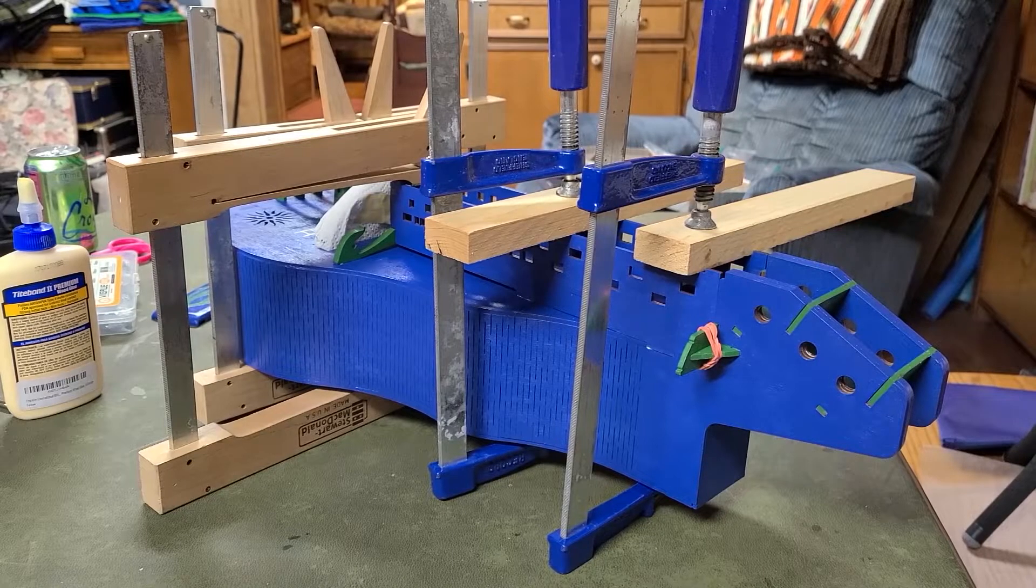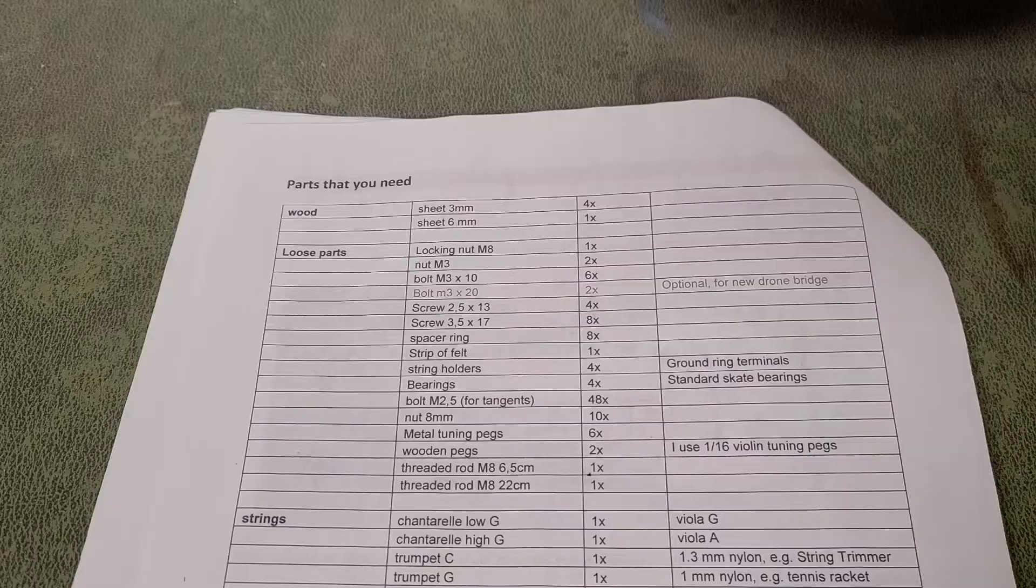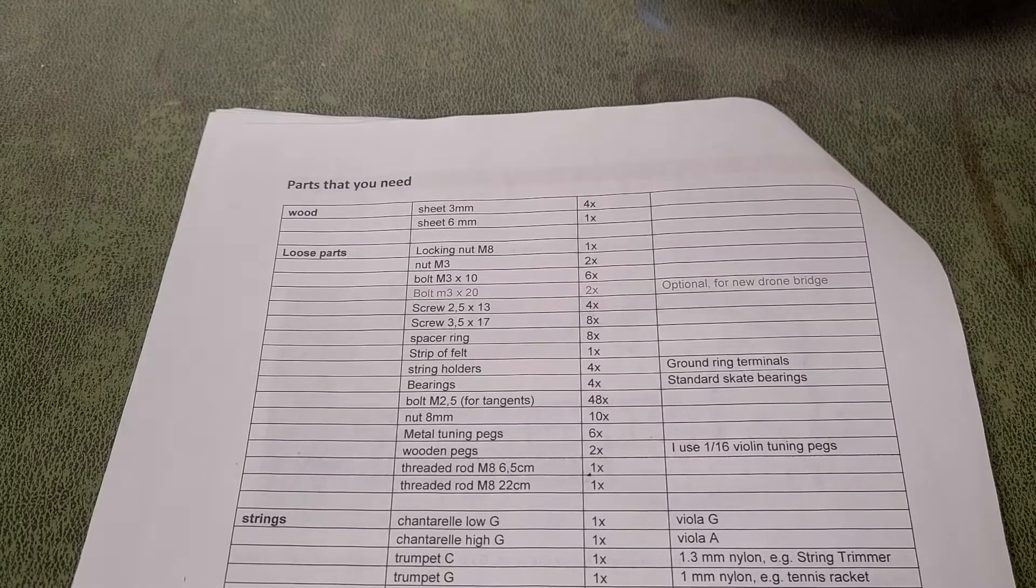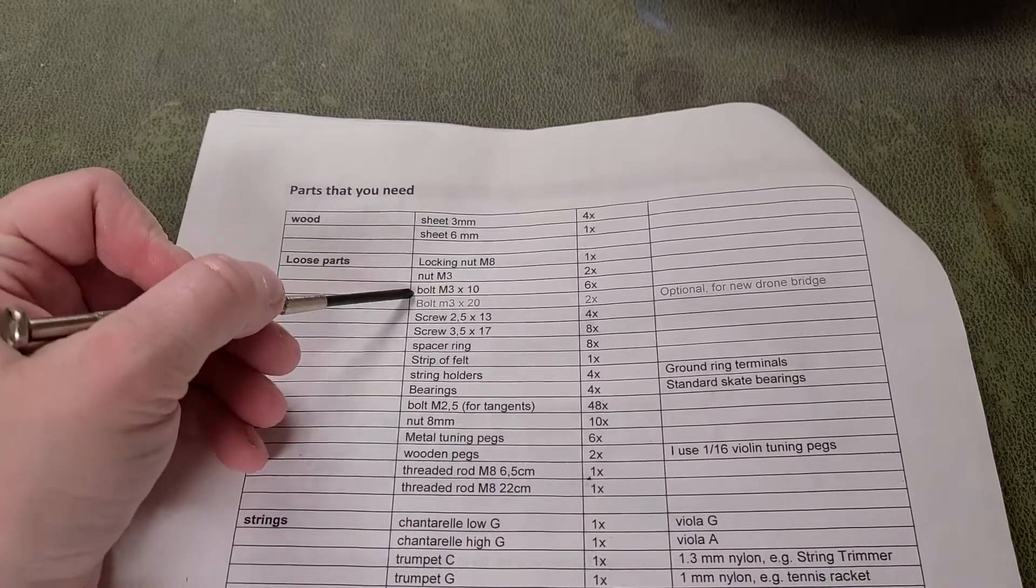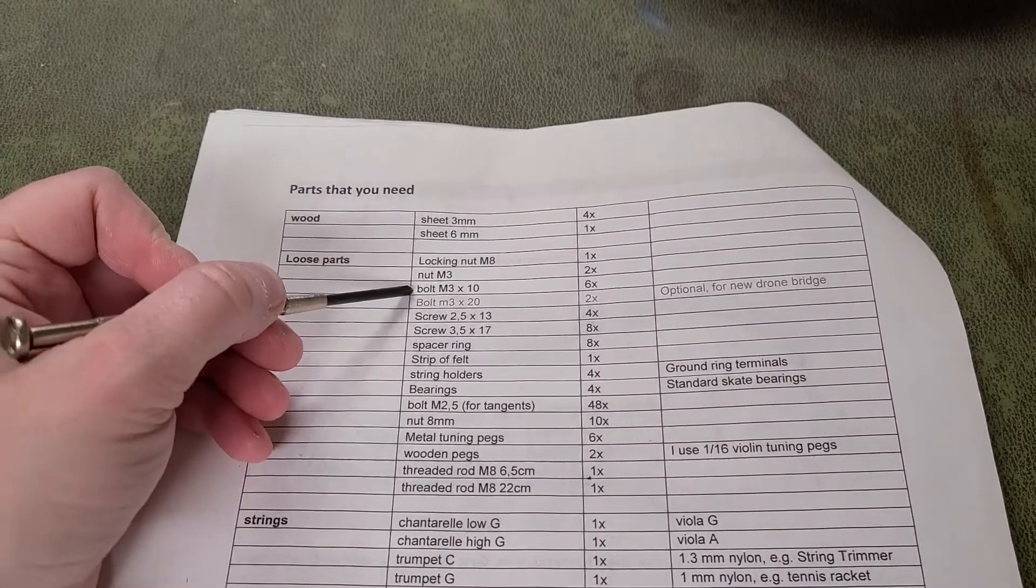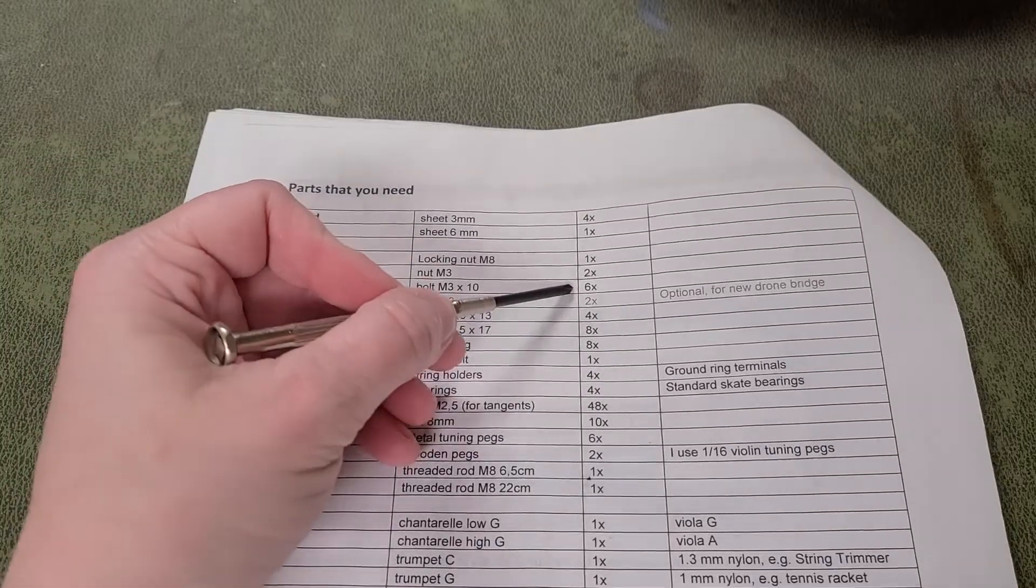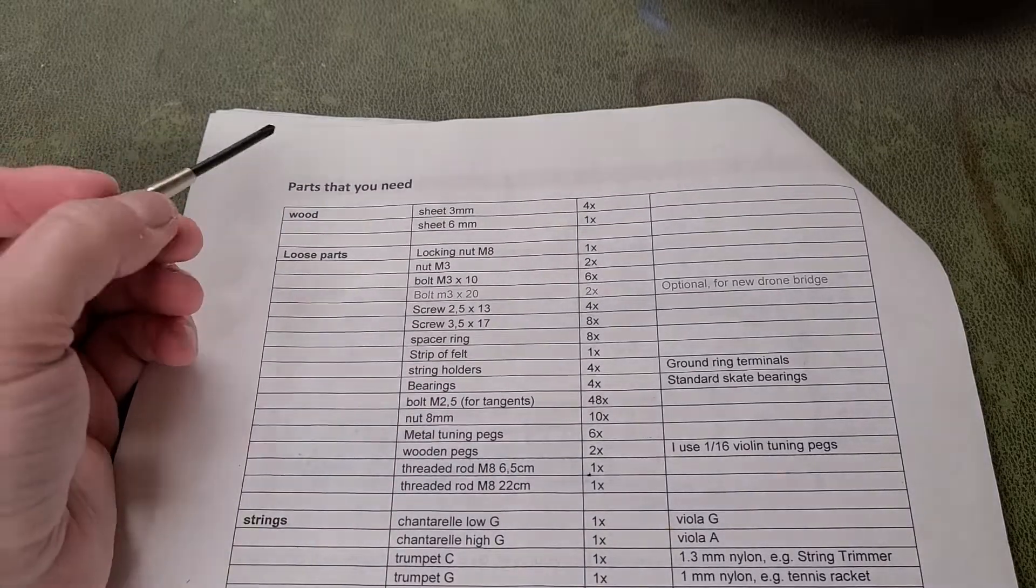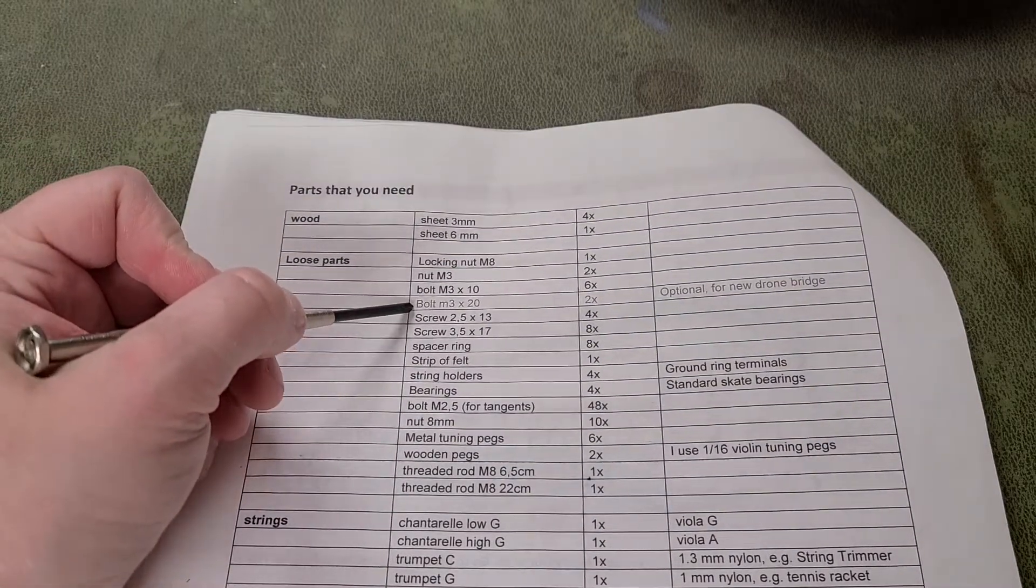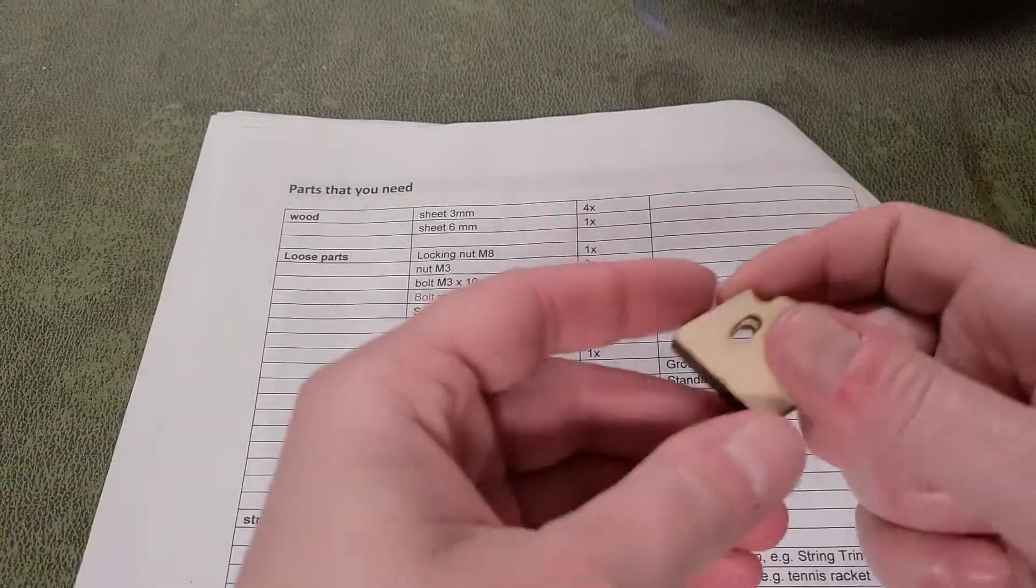While all of that dries, I want to show you how to set up the drone and trumpet bridges. It's kind of part of the final setup, but it's easier to show it to you before the bridges are glued on. This is where you'll need those six 10mm M3 bolts. Two for the original drum bridge, two for the trumpet bridge, and two for the melody bridge. If you plan to use the alternate drum bridge design, then you'll only need four of those 10mm bolts, since you'll use the 20mm M3 bolts for the alternate drum bridge.